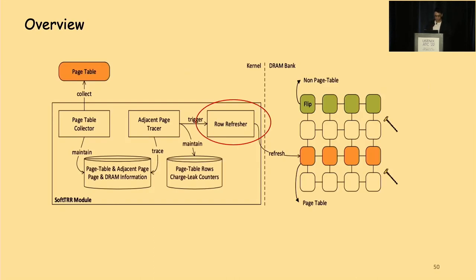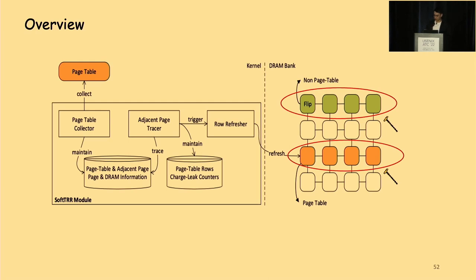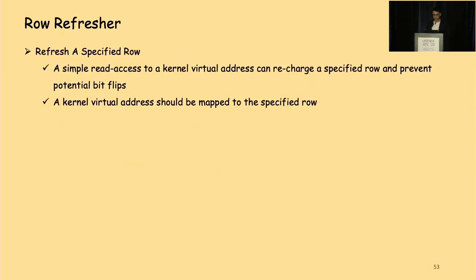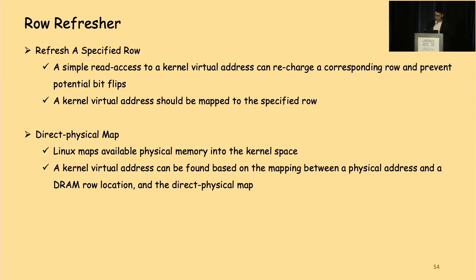The last component is the row refresher. When counters reach the predefined limit, the row refresher is triggered to refresh the desired rows hosting page table pages. Rows hosting page tables are immune to Rowhammer-induced bit flips, while non-page-table rows remain potentially vulnerable. To refresh a specified row, we use a memory read to a kernel virtual address, as a memory read can charge a row and suppress any possible bit flips. Before doing the read access, we also flush CPU caches of the kernel virtual address. To obtain the correct kernel virtual address, the row refresher leverages the direct physical map, built by the Linux kernel to map available physical memory into kernel space.